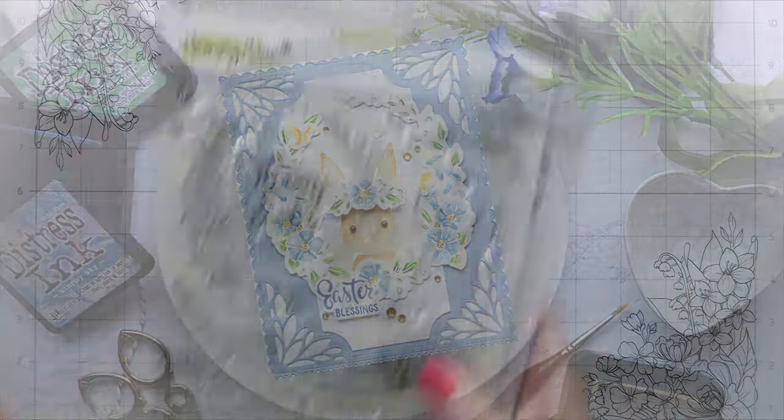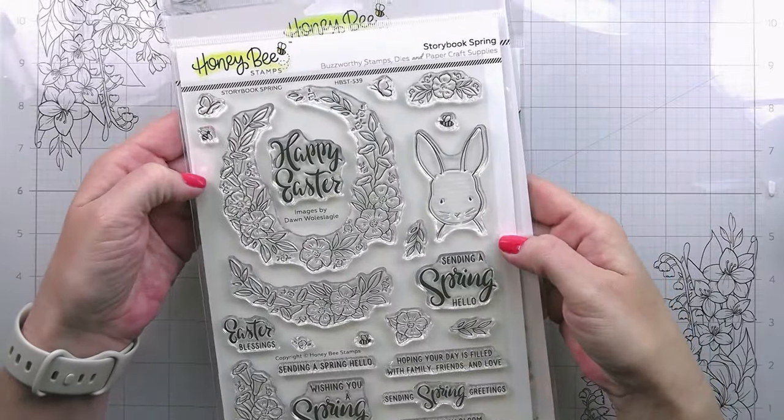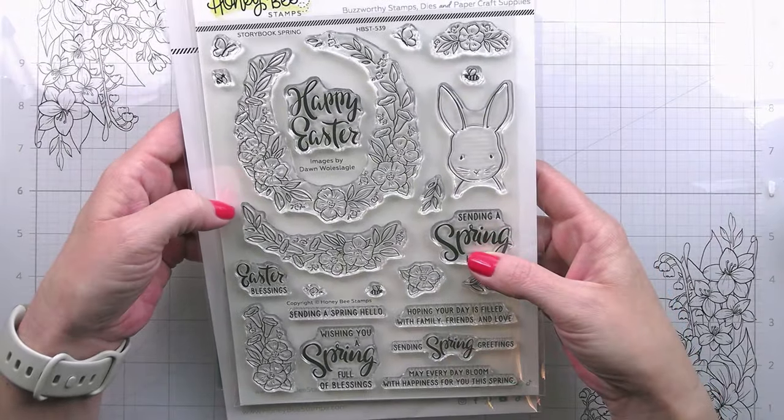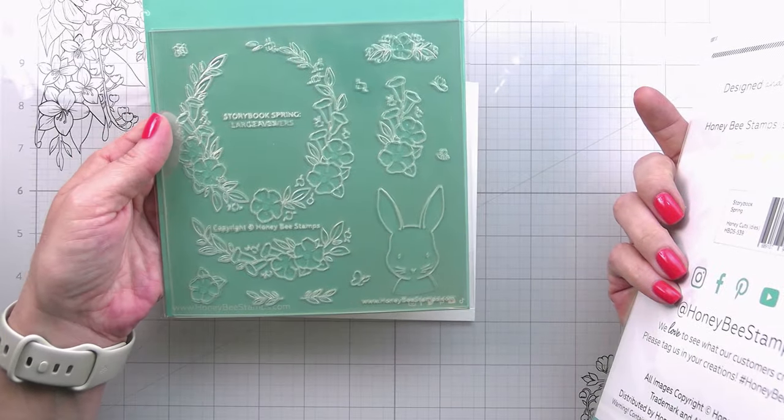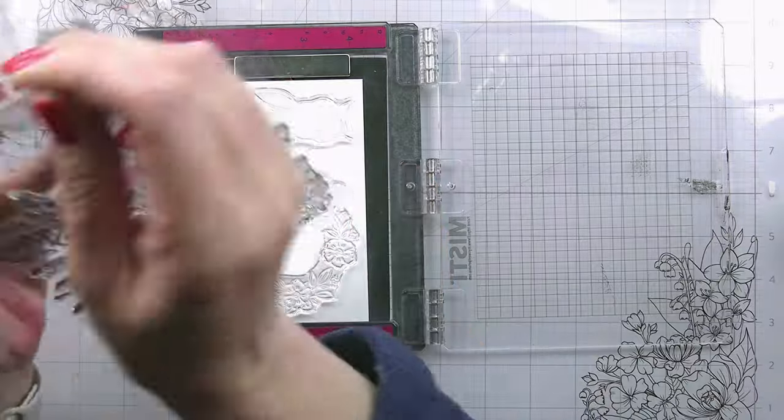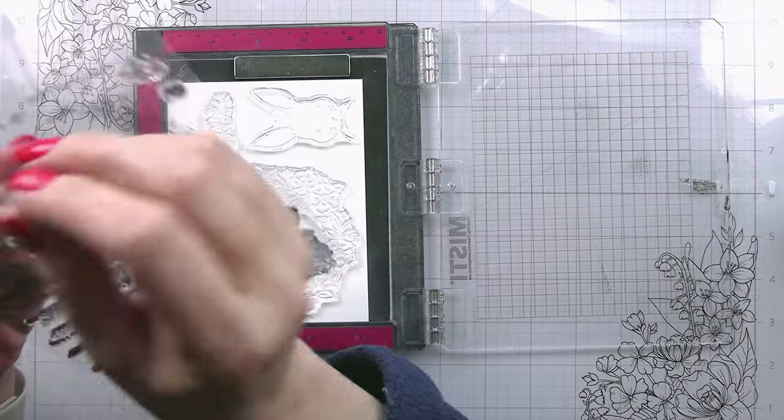Hi guys, it's Kelly here and I'm back with another video for Honeybee Stamps. Today I'm super excited to be using this little storybook spring set from the latest release. This was illustrated by my crafty bestie Dawn Woolslaggle. If you're not a colorist, it also has stencils that come with it, but today we're going to be doing a really super easy beginner-friendly watercolor technique.